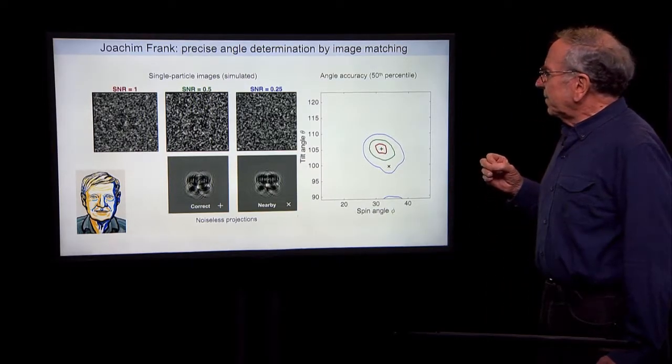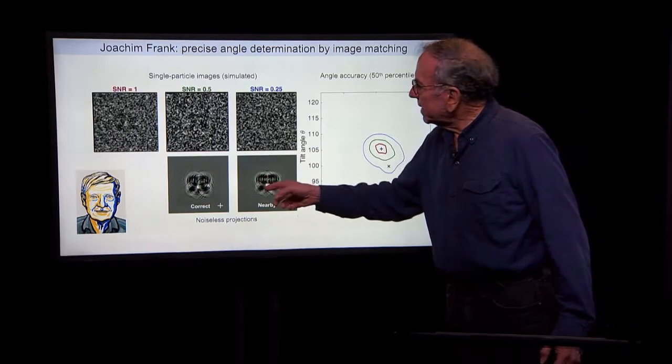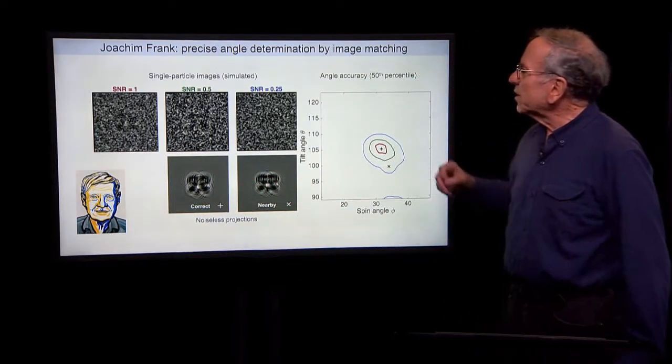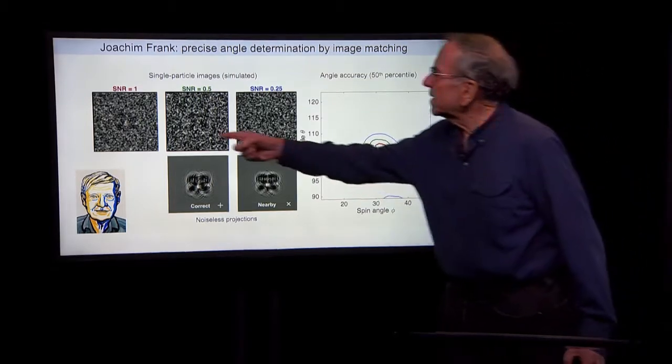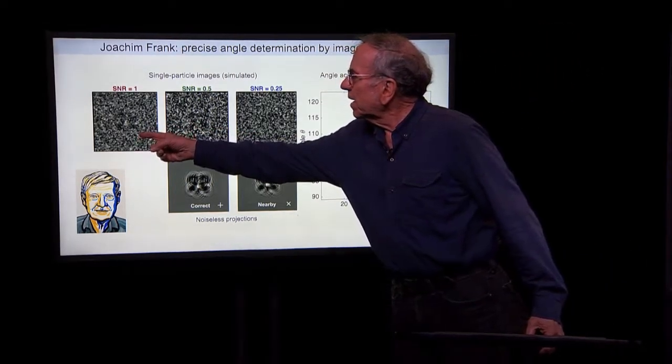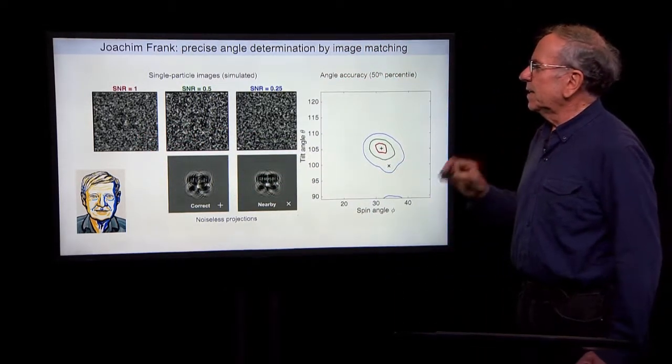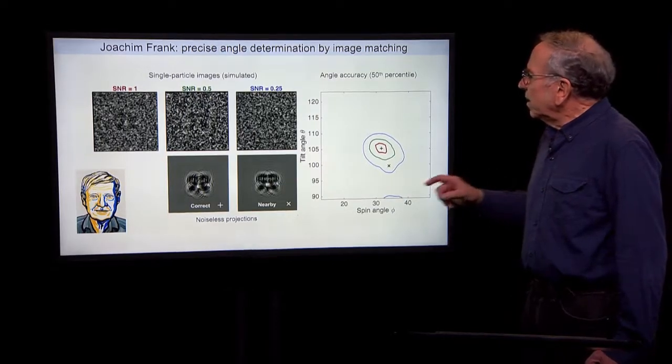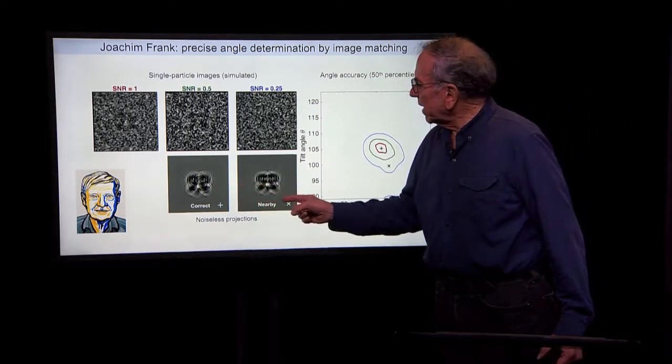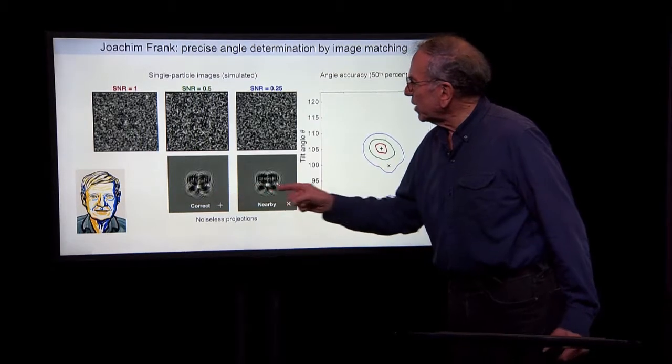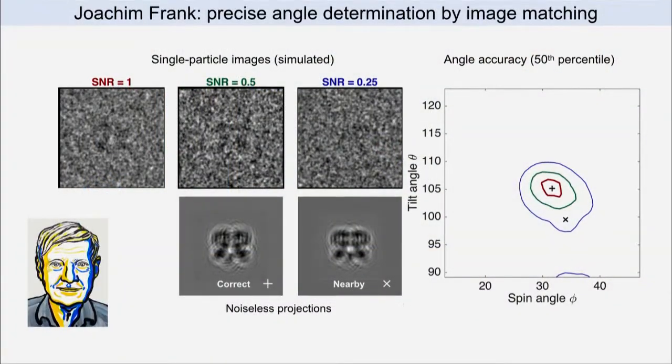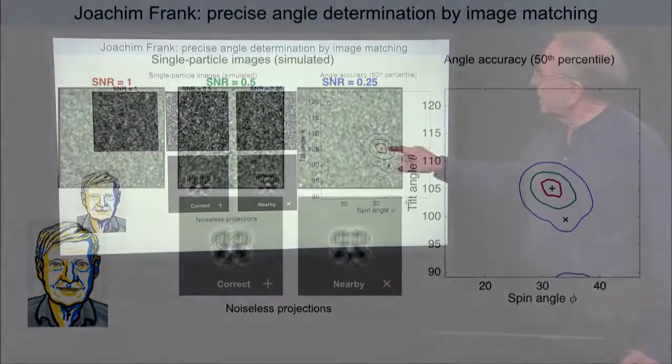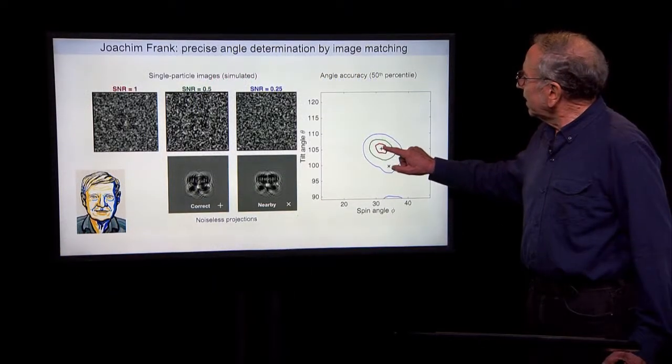well, how big are the errors in angles from an ensemble of images from a particle all in the same orientation, which we can do by simulation. This process of determining angles by doing this comparison between images is something pioneered by Joachim Frank, our second Nobel Prize winner.